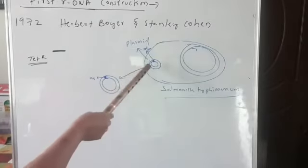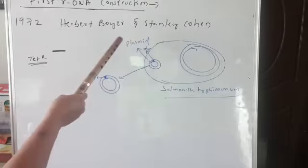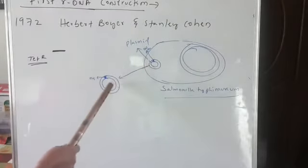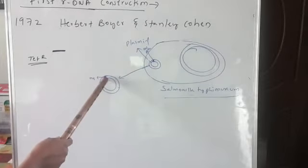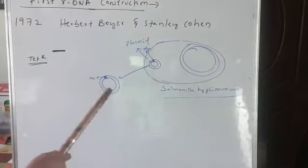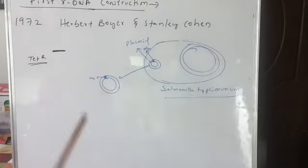We were talking about the plasmid. Herbert Boyer and Stanley Cohen isolated the plasmid — the plasmid which is having the ORI gene. Now, what is the use of this plasmid? Plasmid is used as a vector here; it is acting as a vector.